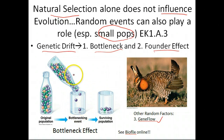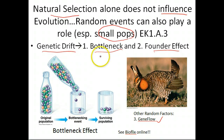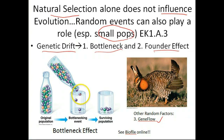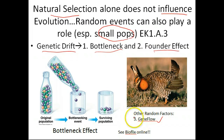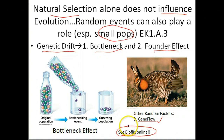Bottlenecking is associated with some sort of natural disaster where the population that survives may have allele frequencies misrepresented compared to the original population. These random events can totally change a population and its allele frequencies. If you want to review this, the BioFlix on our website will help you.